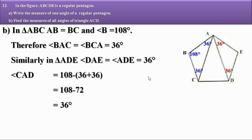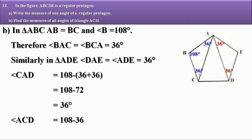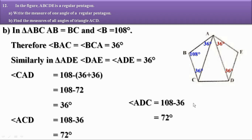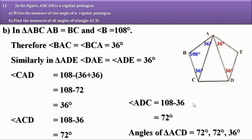So angle CAD = 36°. The total angle at C is 108°, and angle BCA = 36°, so angle ACD = 108° - 36° = 72°. Similarly, angle ADC = 108° - 36° = 72°. Therefore, the angles of triangle ACD are 36°, 72°, and 72°.